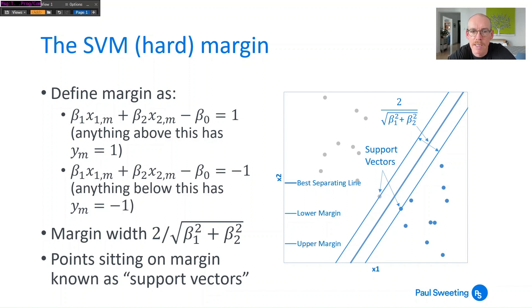Now if we do this then this means our margin width is 2 over the square root of β₁² plus β₂² or it's 2 over the norm of β₁ and β₂. And any points which are actually sitting on these margins, these are known as support vectors and this is where we get the term support vector machines from.